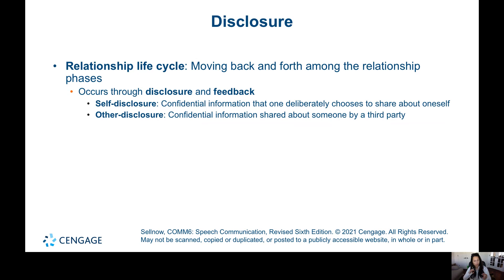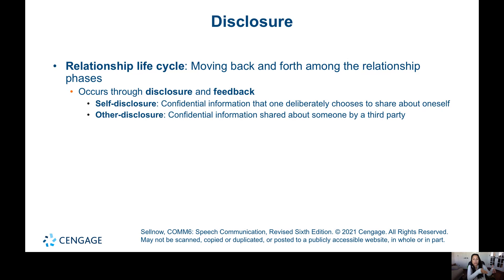There are two ways we disclose: self-disclosure, which is information about ourselves, and other-disclosure, which is information shared about a third party. For example, if I'm upset at my husband and share that with a friend asking for advice, I'm self-disclosing but also other-disclosing — sharing information about my husband. You want to be careful about what you disclose about others so you don't breach any trust.